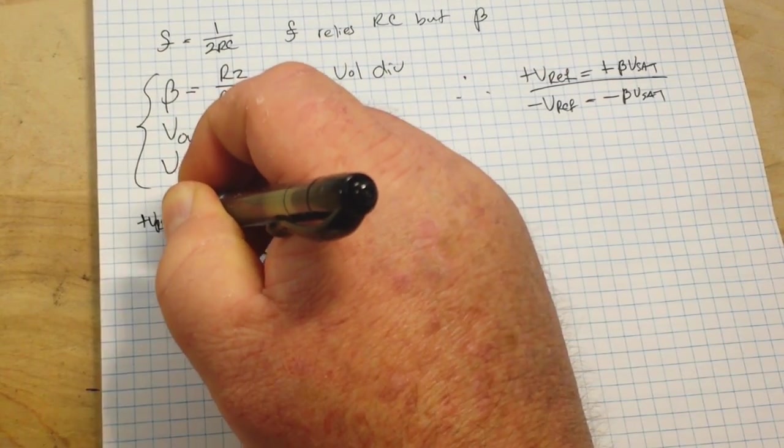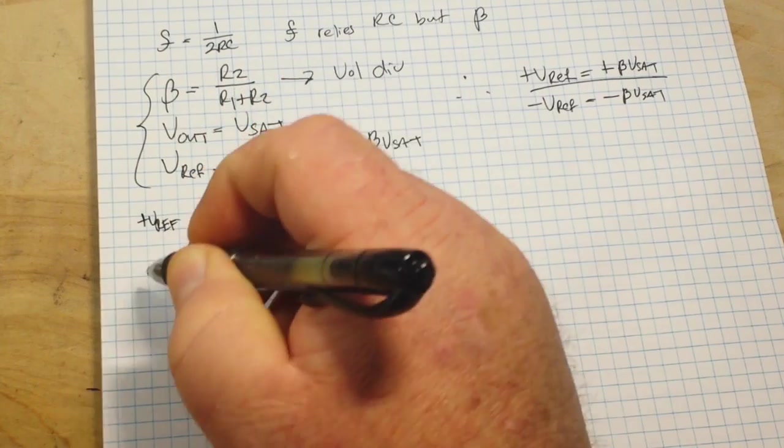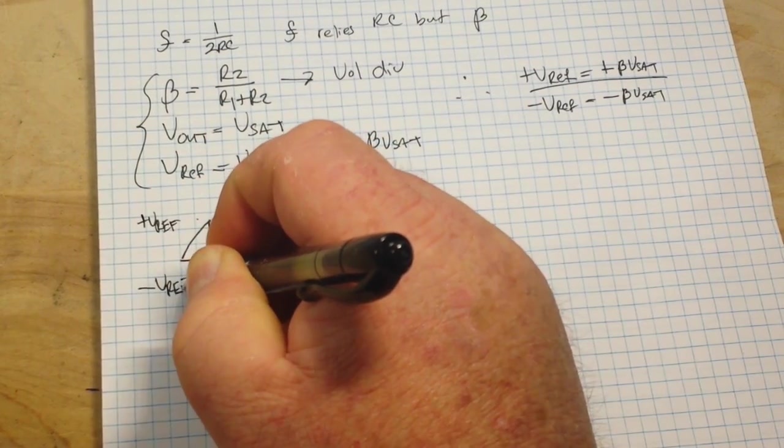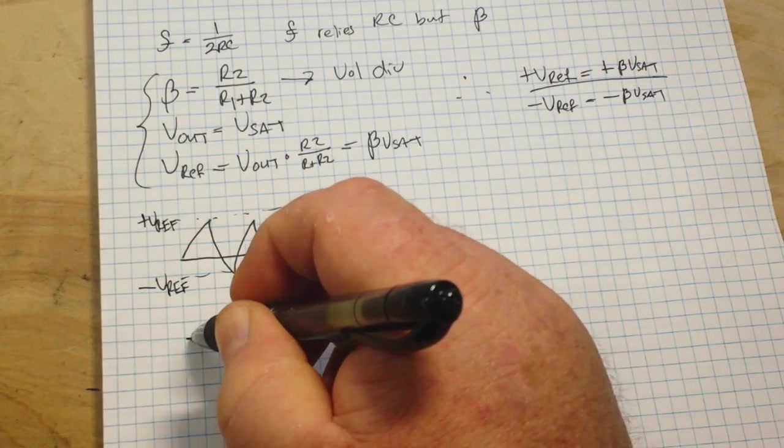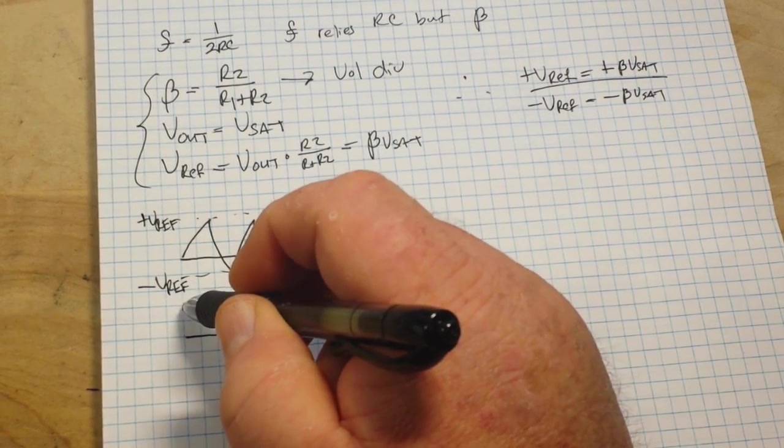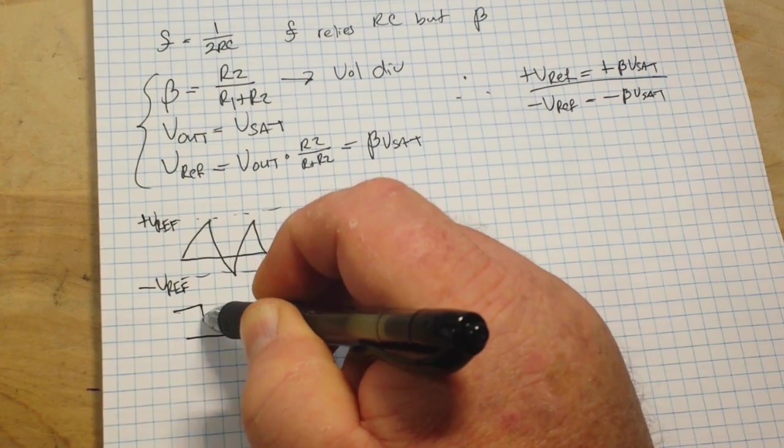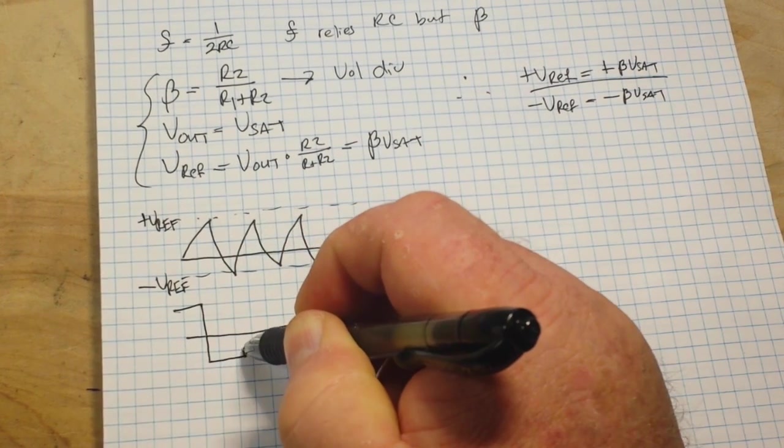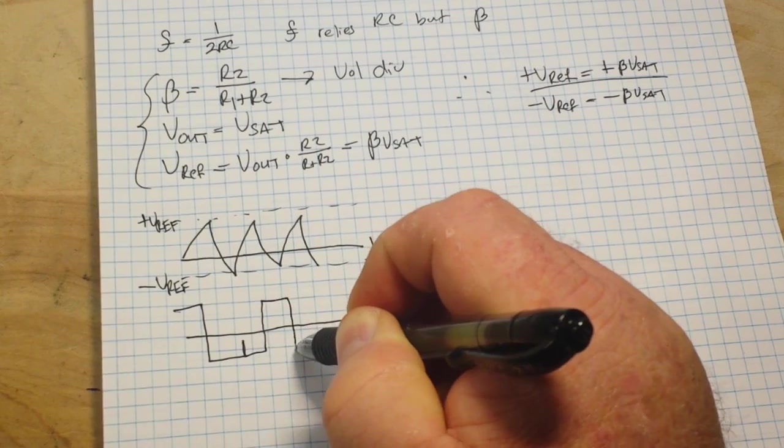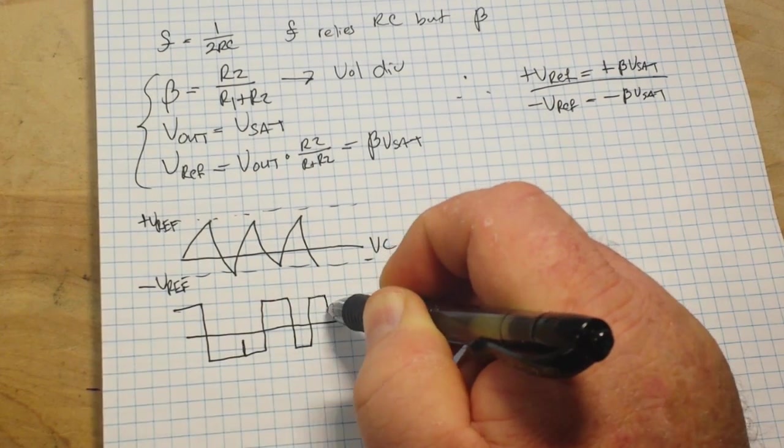So this is our positive Vref. This is our negative Vref. Now hopefully if I can draw this to the same time constant. You get the idea.